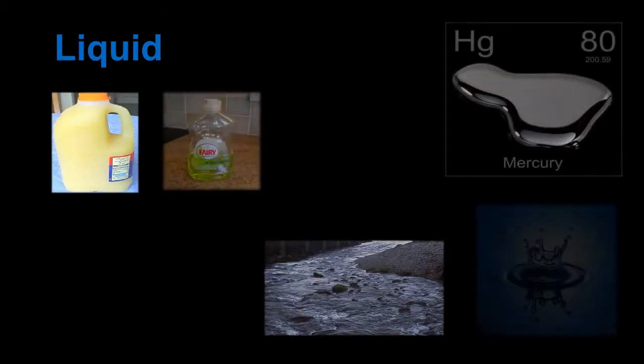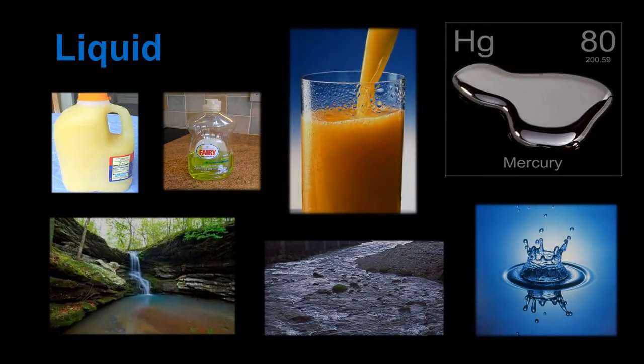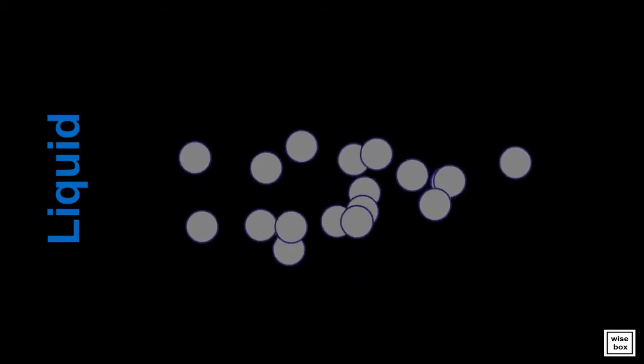Here are some examples of liquid substances. Here is an illustration showing the close but sliding particles of liquid. It also shows the moderate movement of the liquid particles.